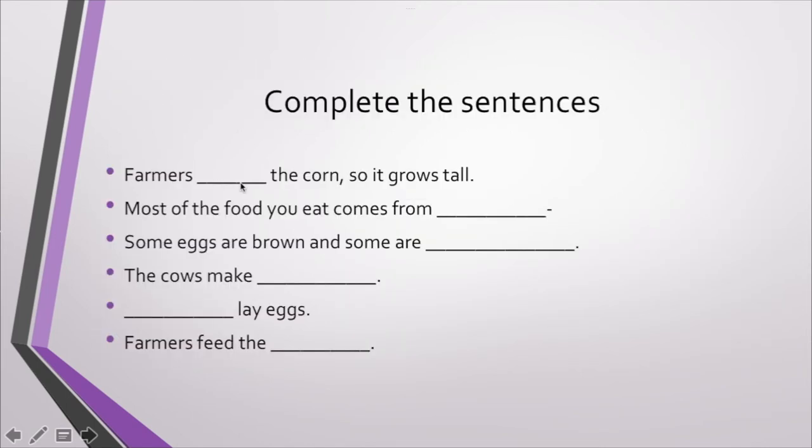Farmers, the corn. ¿Qué hacían los granjeros? Plantaban el maíz. So, farmers plant the corn. Así pueden ir completando cada una de las oraciones. Lo van a hacer solitos en su cuaderno. Toda la información está en el texto que acabamos de leer juntos.